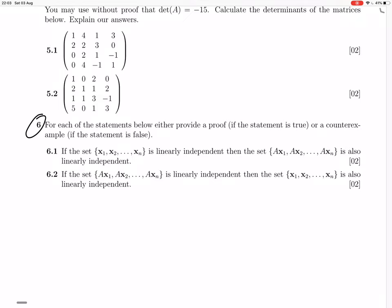6.1. So probably one of these is going to be true, and another is going to be false. Which way around? If the set {x₁, x₂,..., xₙ} is linearly independent, then the set {Ax₁, Ax₂,..., Axₙ} is also linearly independent. Is that true?